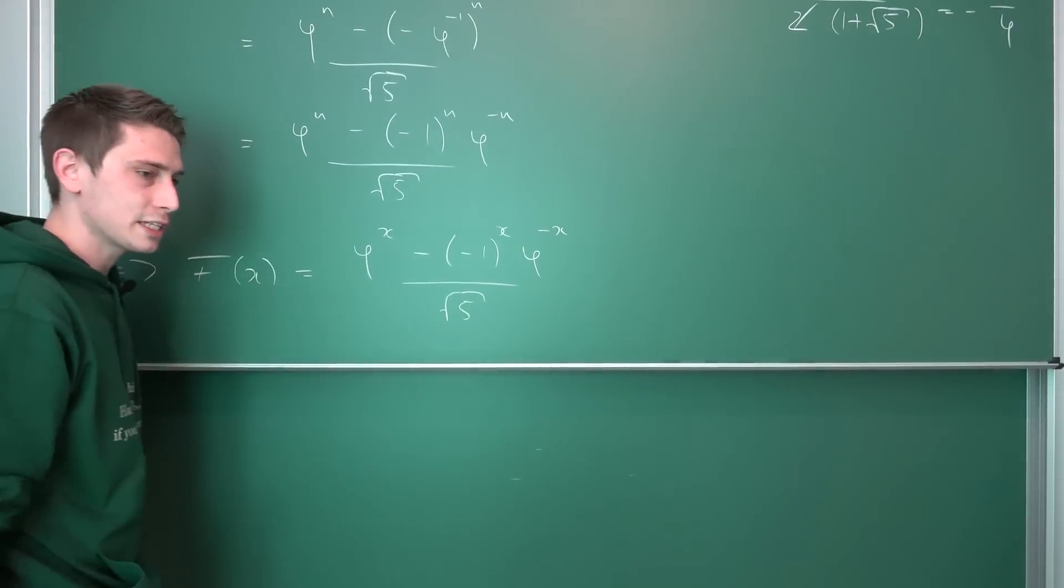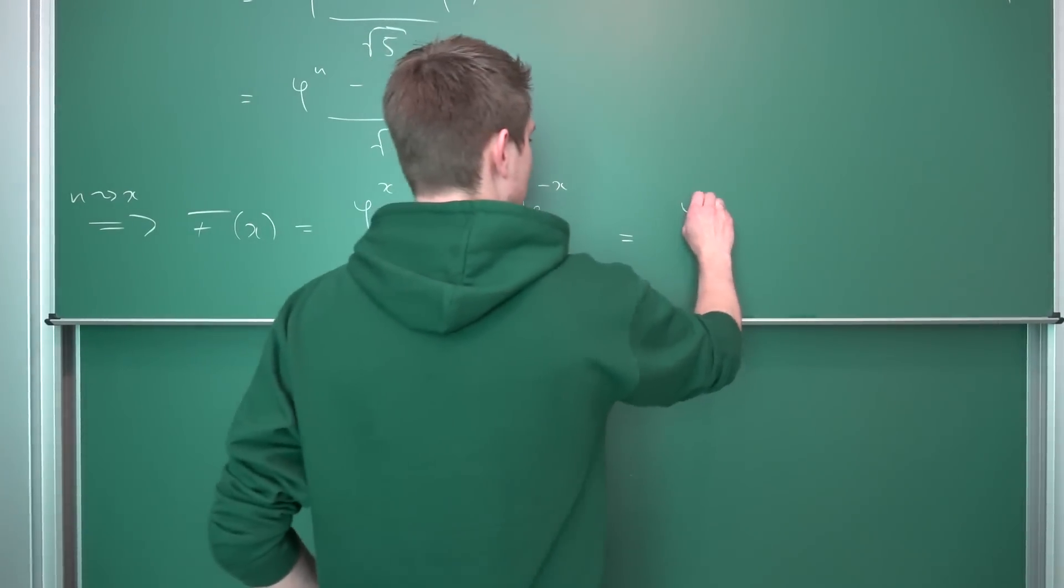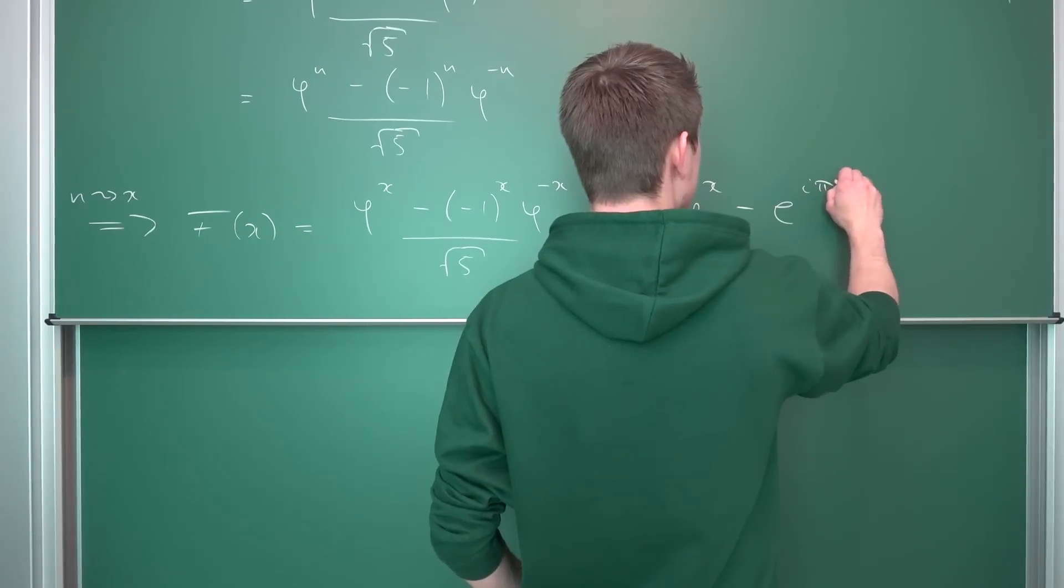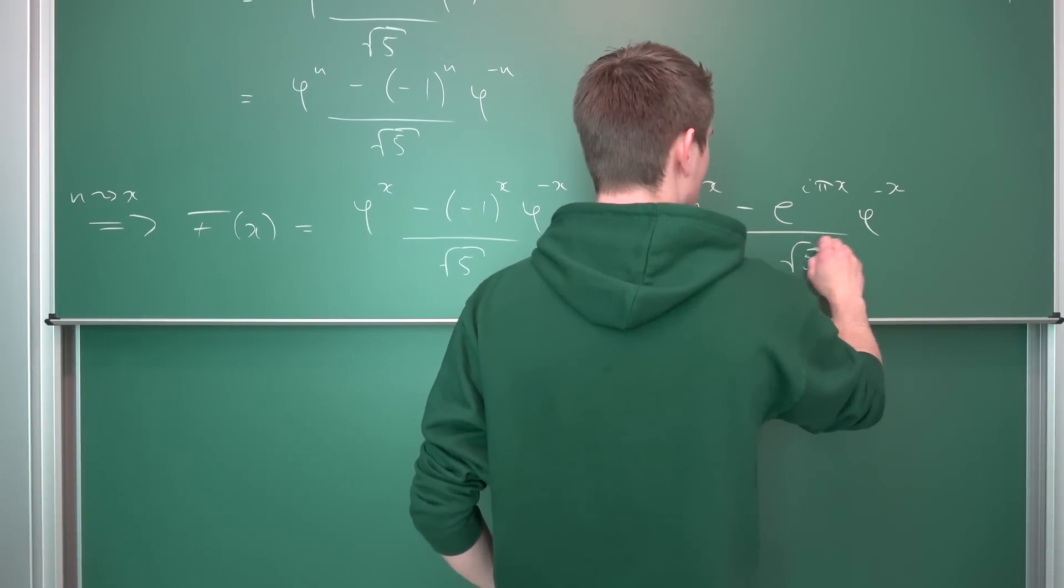x is equal to phi to the x power minus negative 1 to the x power phi to the negative x power over the square root of 5. And like I said before, negative 1 on the principal branch is e to the i pi. So, by the power rules, we have that this is phi to the x power minus e to the i pi x phi to the negative x power over the square root of 5.